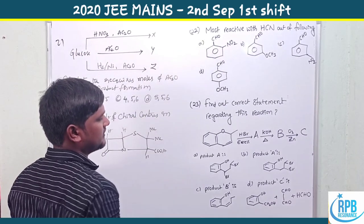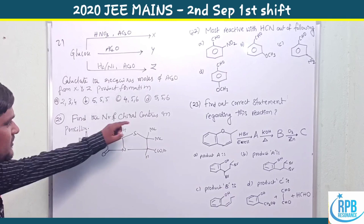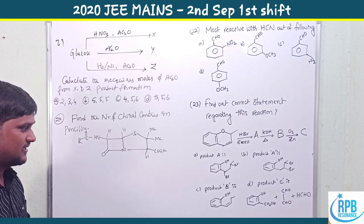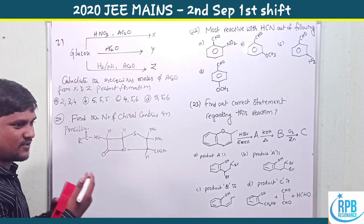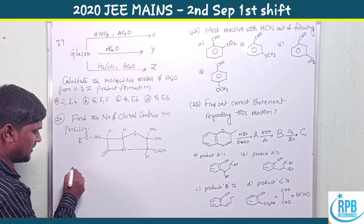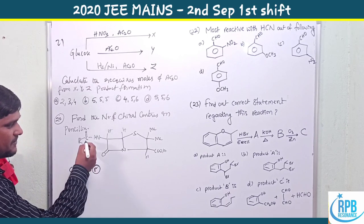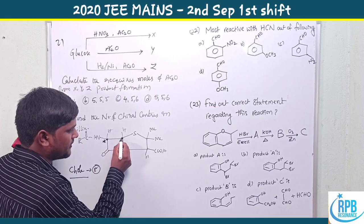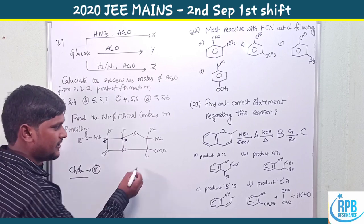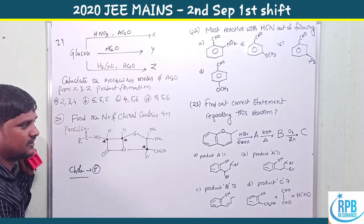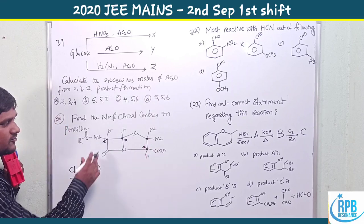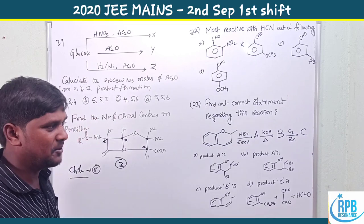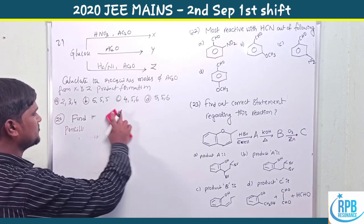Question 20: Find the number of chiral centers. This involves penicillin and cholesterol, common examples from NCERT stereochemistry. Penicillin has three chiral centers and cholesterol has eight chiral centers.